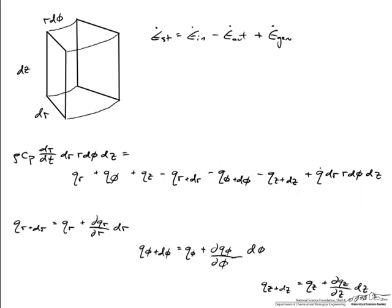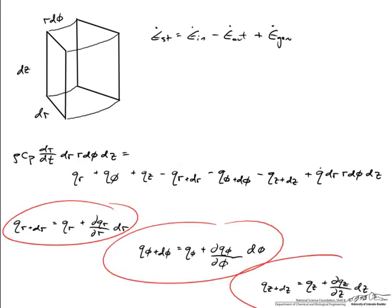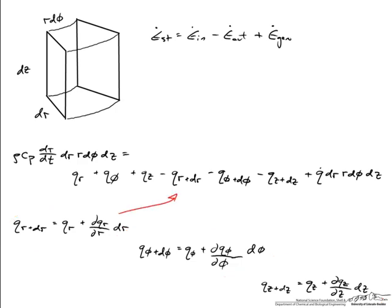One thing we need to figure out is how does the heat leaving at Q_r plus dr compare to the heat entering at Q_r? So how does the heat leaving from this front face compare to the amount of heat coming in from this back face? We can do it for all three dimensions - the r, the phi, and the z dimension - by way of Taylor series expansions, which I've done down in here. So with these expansions, we can plug in values now for Q_r plus dr and the phi and z components of it.